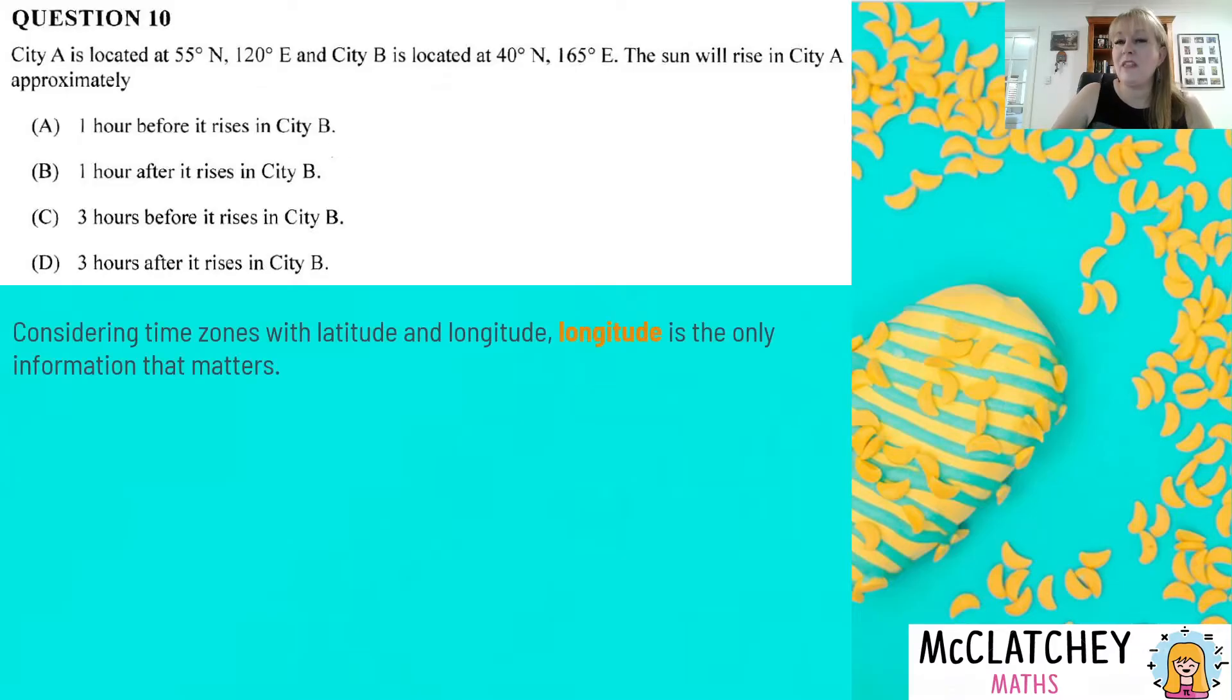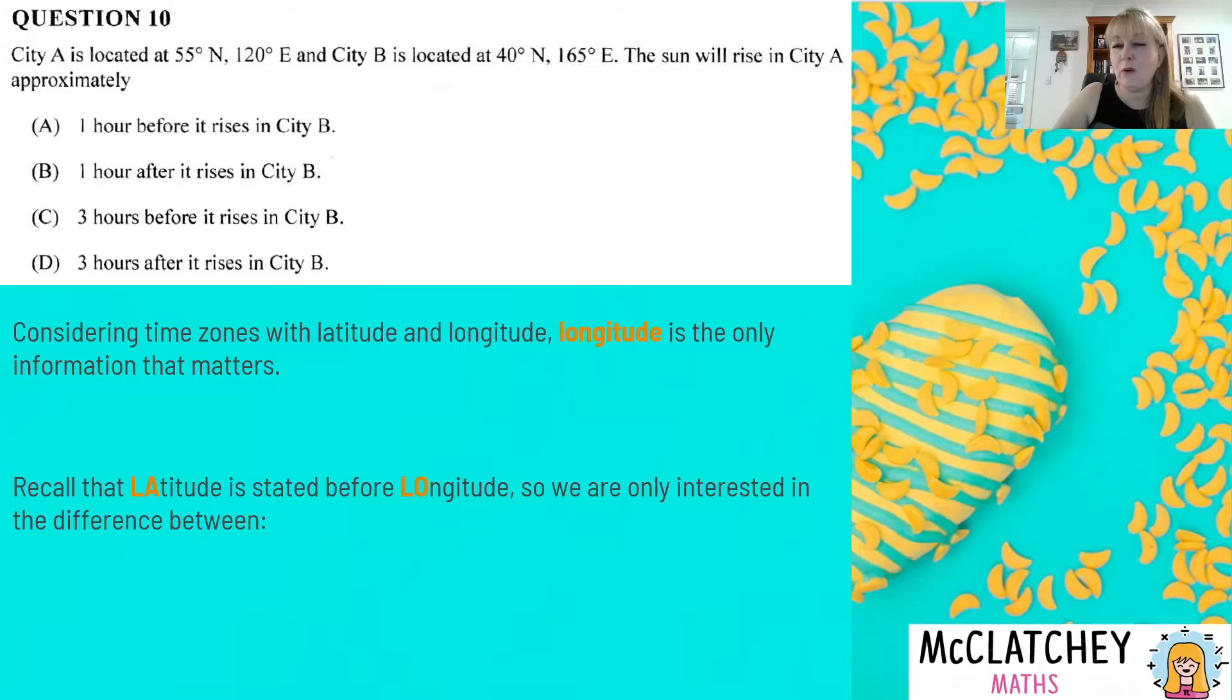The first thing you need to recognize is that when we're thinking about time zones we're only interested in longitude. The Earth rotates on its axis and all of those longitudes roughly line up with time zones. So longitude is the only thing that's important. Now this is the one that people often get confused about which one comes first. Latitude is always stated before longitude and the easy way to remember that is LA is before LO in the alphabet. That's how I remember it. So you've noticed I've highlighted those in orange. So 55 degrees north and 40 degrees north are not relevant at all. That's our latitudes. We want to find the difference between 165 and 120 degrees which I've circled there for you. So our difference between those two longitudes is going to be 45 degrees.